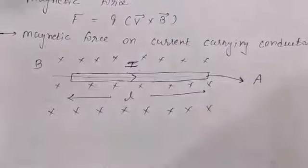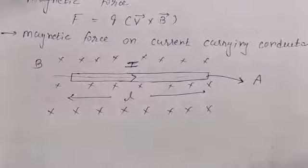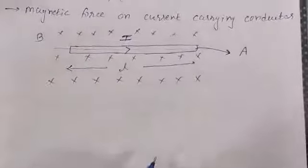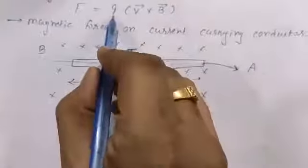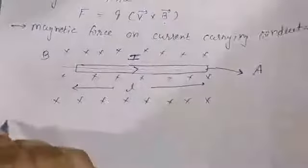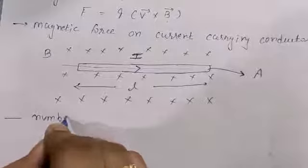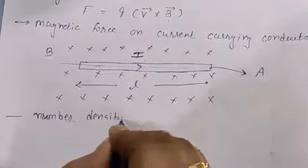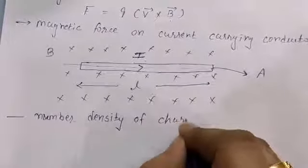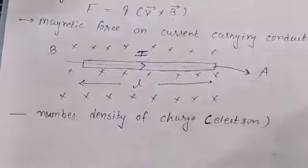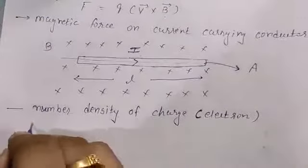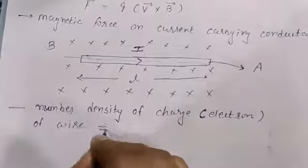This cross symbol is showing the uniform magnetic field inside. So, on this wire there will be some magnetic force, and we will derive the formula of that magnetic force on the current-carrying conductor. To prove it, we will use the general formula F = Q V cross B. First we will find out Q — the charge of this wire. To find the charge, we will take the number density of charge carriers, i.e., electrons, in the wire. Suppose the number density is small n.